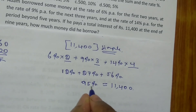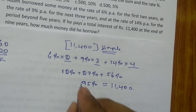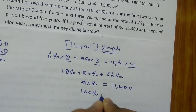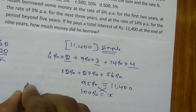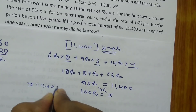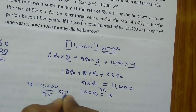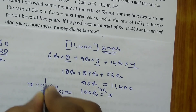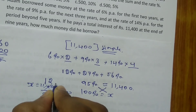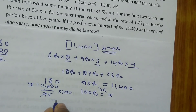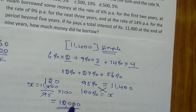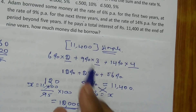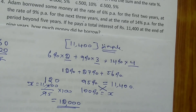You have to find how much money Adam borrowed, which is the 100% principal. Using cross multiplication: X = 11400 divided by 95, multiplied by 100. This gives Rs.12000. So Rs.12000 is the total amount Adam borrowed from the bank, for which he paid Rs.11400 as the total simple interest.